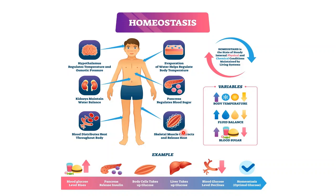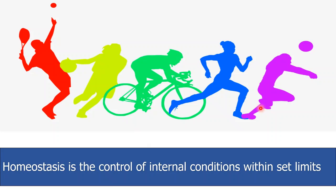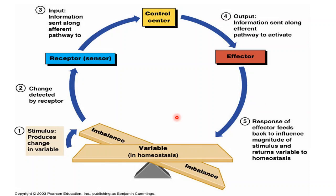Is temperature the only variable kept constant? Of course not. The fluid balance, blood sugar, blood pressure, and water content in the body are all kept within certain limits. This is what homeostasis is about: homeostasis is the control of internal conditions within set limits. No matter what you're doing or what the conditions are outside or inside your body, temperature is always around 37°C, water content is stable, and all these variables stay within set limits.